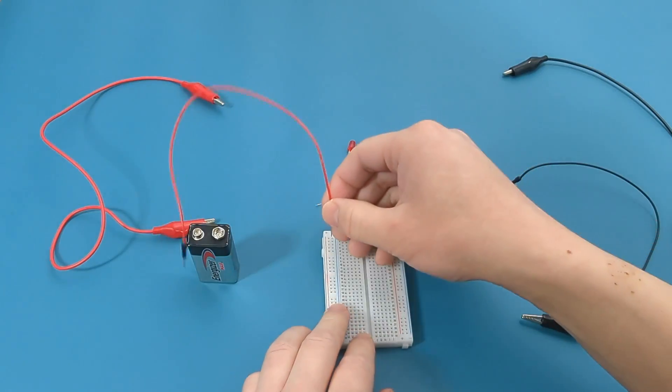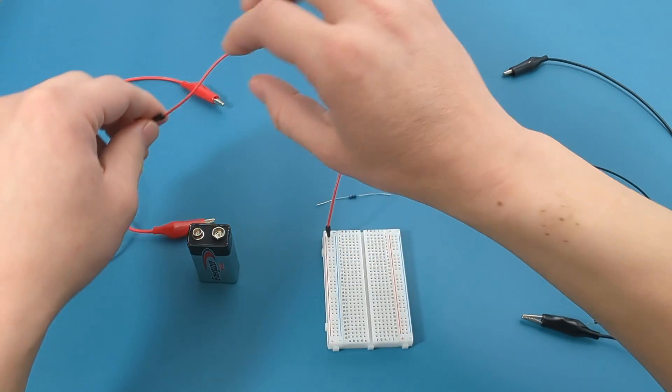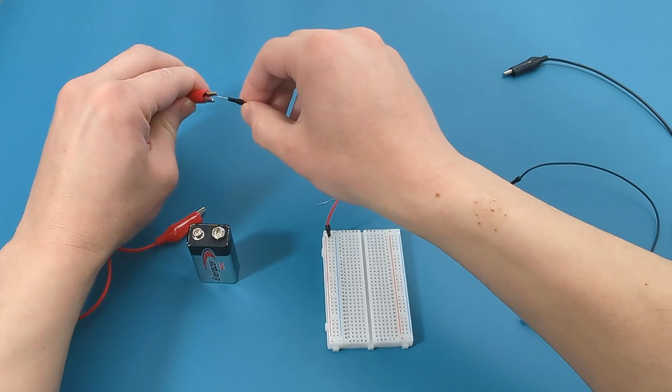To set this up, connect the red alligator wire to the breadboard's positive terminal. Connect the opposite end of the red alligator wire to the red alligator clip.